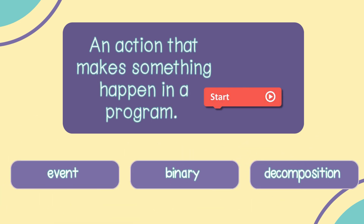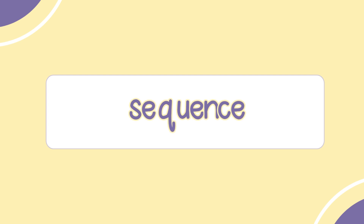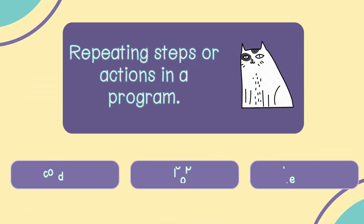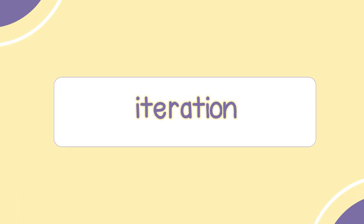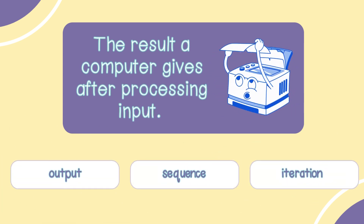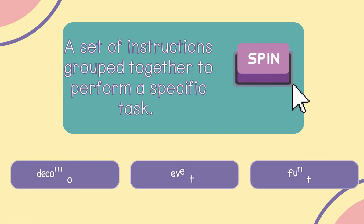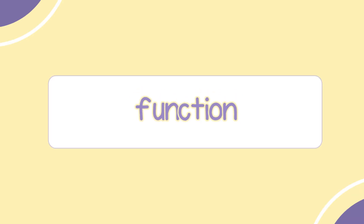An action that makes something happen in a program — event, binary, or decomposition? Event. A series of steps that happen in a specific order — abstraction, loop, or sequence? Sequence. A rule that lets a program decide between options, often using if statements — the answer is condition. Repeating steps or actions in a program — is that condition, loop, or iteration? Iteration. The result a computer gives after processing input — output, sequence, or iteration? The answer is output. A set of instructions grouped together to perform a specific task — decomposition, event, or function? The answer is function.